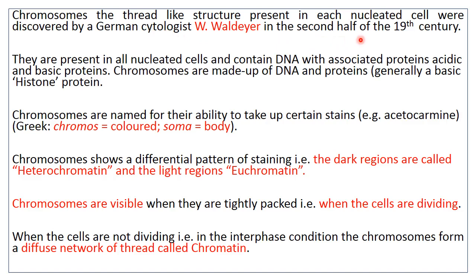Chromosomes are present in all nucleated cells and are made up of DNA and protein. Two types of proteins are present, having acidic and basic nature, and in the majority of cases the basic protein, that is histone, is present.